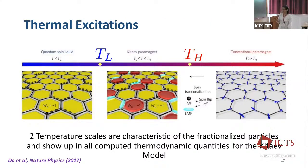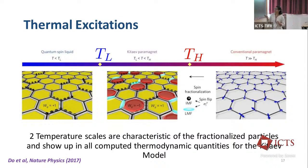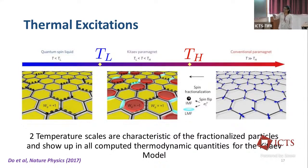What happens as we add temperature? At very low temperatures, fluxes are exponentially rare and you have dispersive Majorana fermions. As you increase temperature to TL, which is of the order of the flux proliferation temperature, all fluxes become fully disordered. Increasing temperature further to TH, of the order of the Majorana fermion bandwidth, you excite the itinerant Majorana fermions. Past TH, you get back a conventional paramagnet. These two temperature scales are characteristics of the two fractionalized particles of the Kitaev spin liquid, and they show up in all thermodynamic quantities.